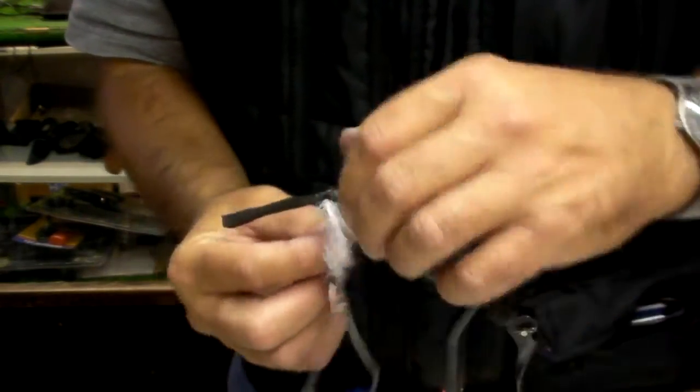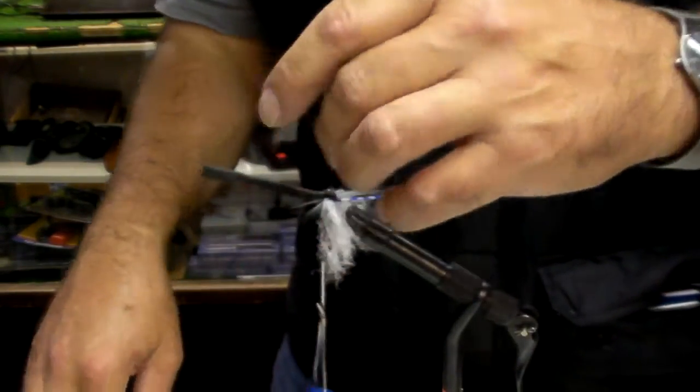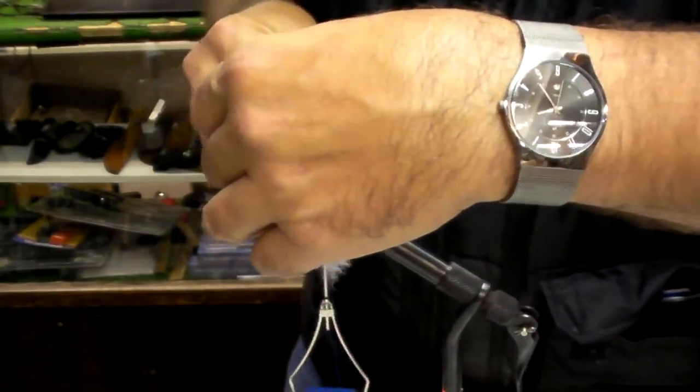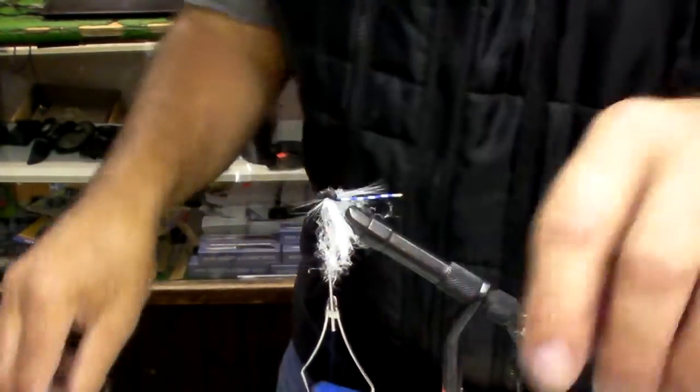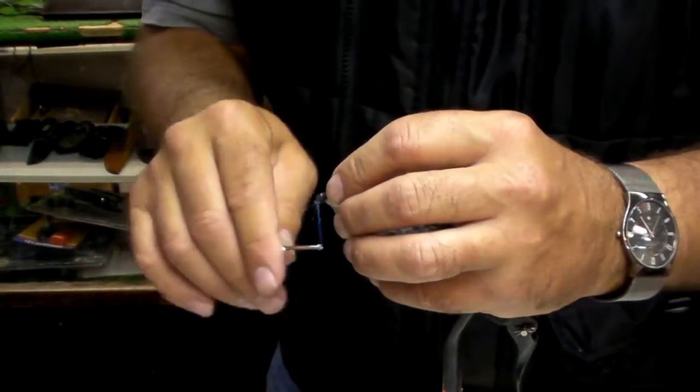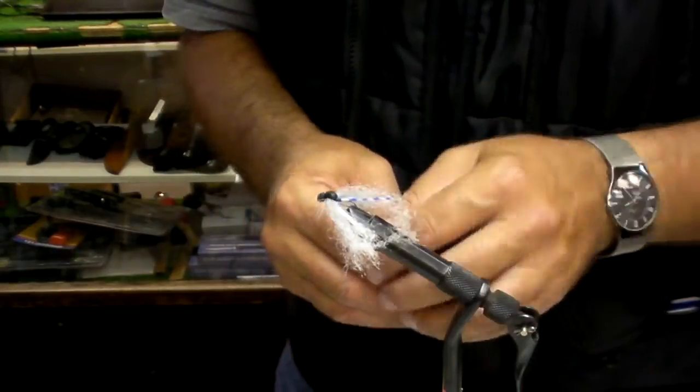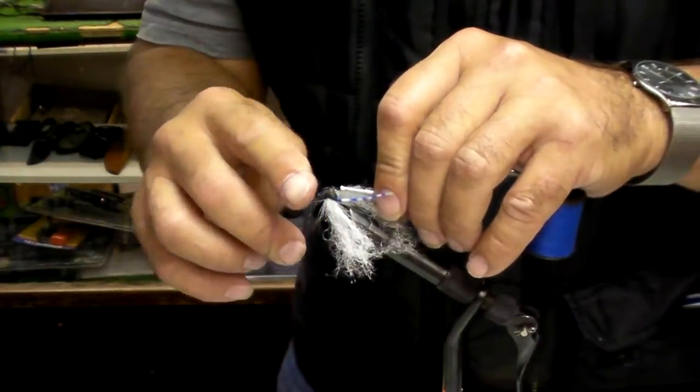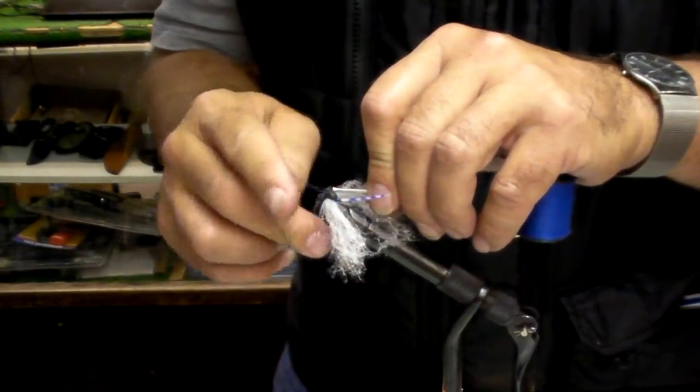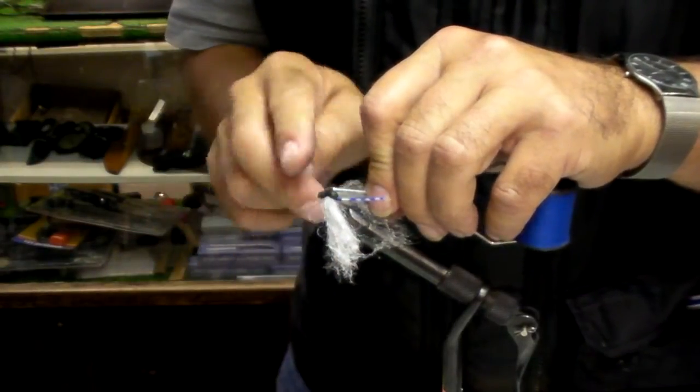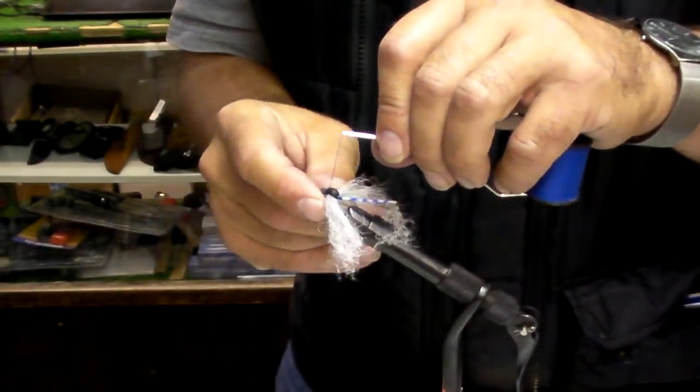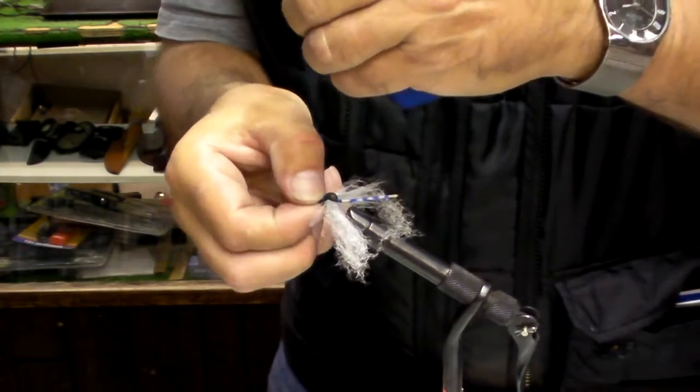Then we can trim off the excess foam and leave a little bit of a tag to help with flotation. We can use a multiple turn, four-turn whip finish behind the eyes. That is most of the tying done. Now we're going to take this off.